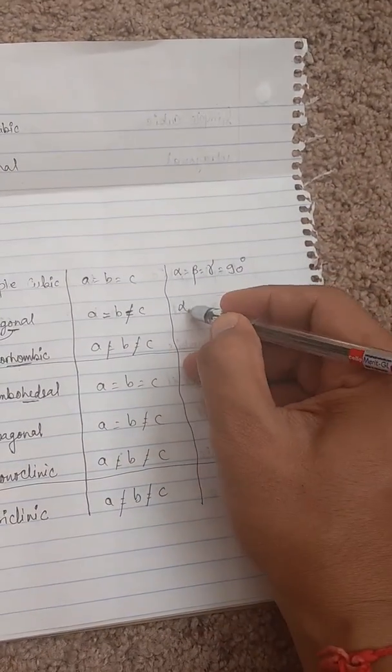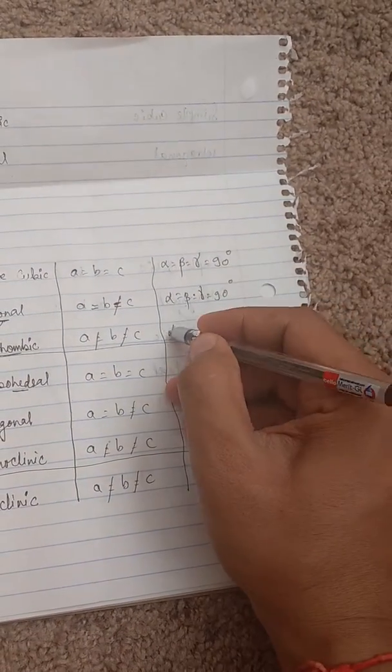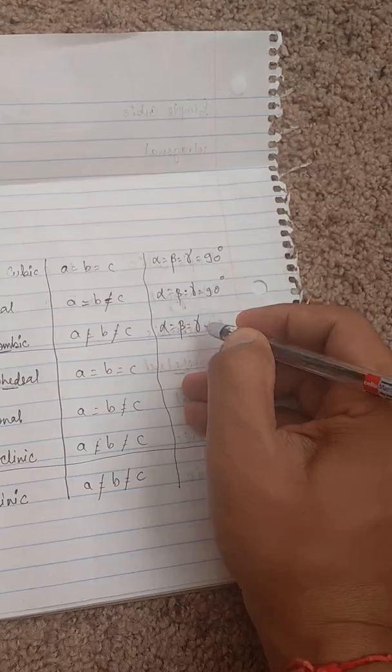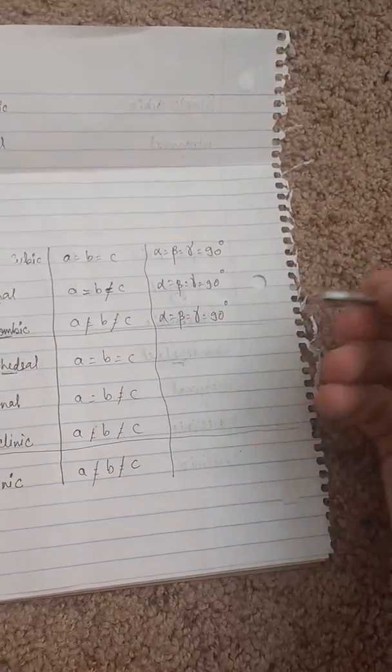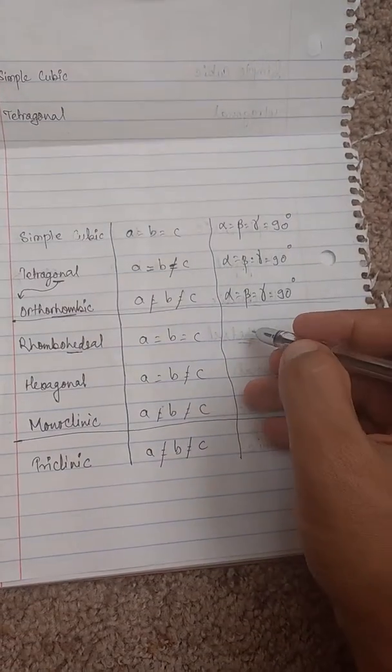The same ones are easy - simple cubic, tetragonal, orthorhombic. These are straightforward.